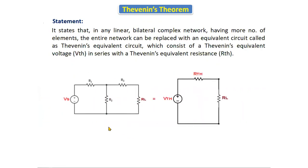If we take one circuit, the total circuit can be replaced by an equivalent voltage source called Thevenin's voltage, connected in series with equivalent resistance RTH, and that is connected in series with the load. However many resistors there are, we will convert them into one single resistor. The complex circuit can be converted into one simple circuit.